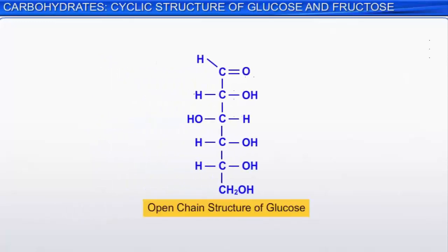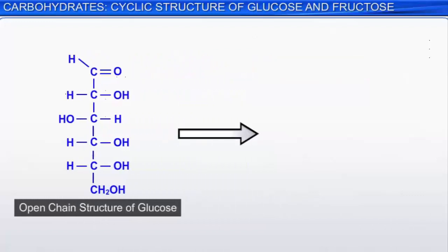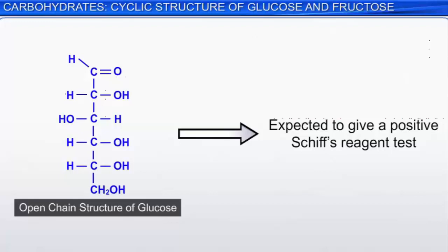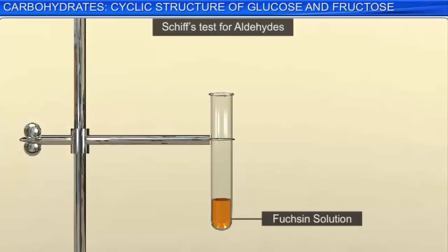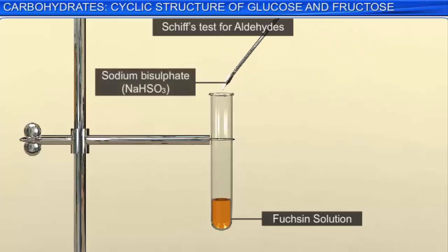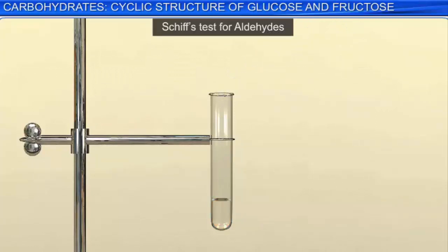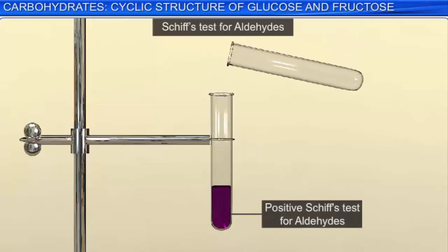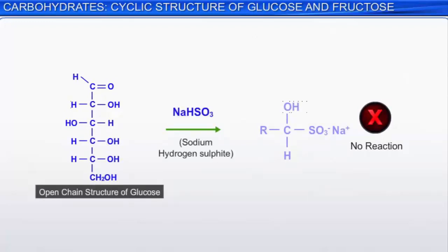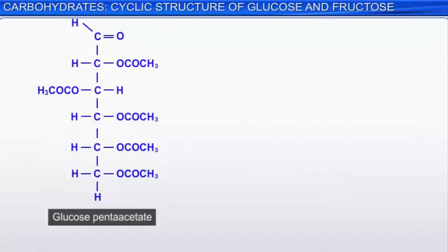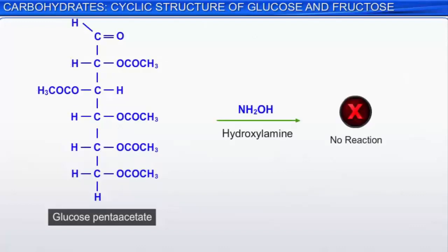The open chain structure of glucose has an aldehyde group; hence it is expected to give a positive Schiff's reagent test. However, it doesn't. In Schiff's test, an orange colored solution of fuchsin is prepared and then decolorized by reacting it with sodium bisulphite. If an aldehyde such as acetaldehyde is added, the solution will turn a vivid purple. Additionally, glucose does not form the hydrogen sulfite addition product when it reacts with sodium hydrogen sulfite. Also, the pentaacetate derivative of glucose does not react with hydroxylamine. This further suggests that there is no free CHO group in glucose.